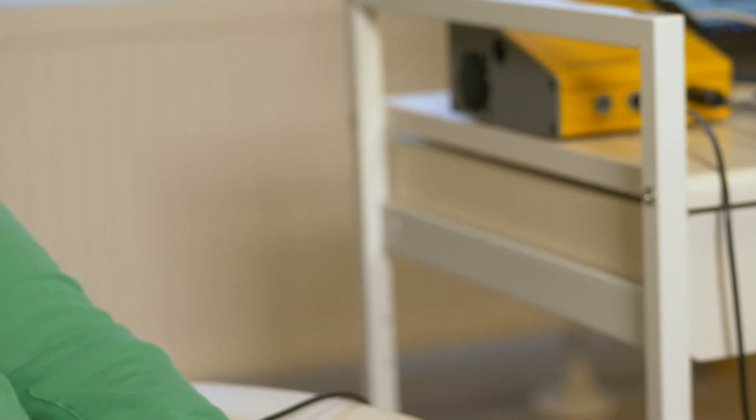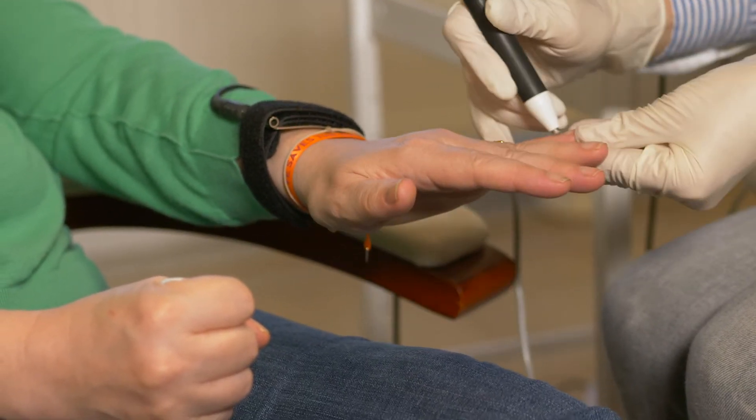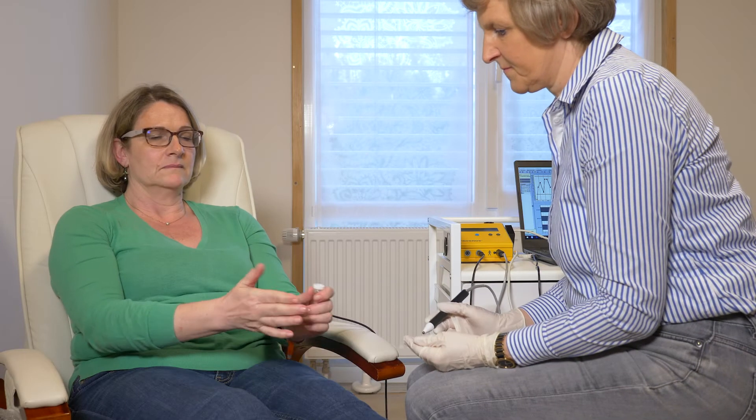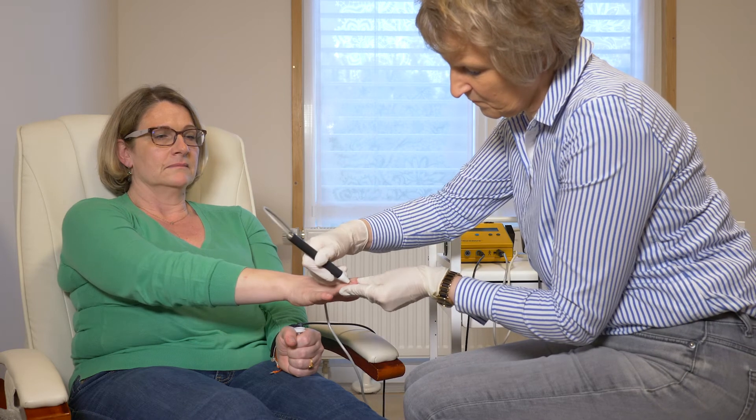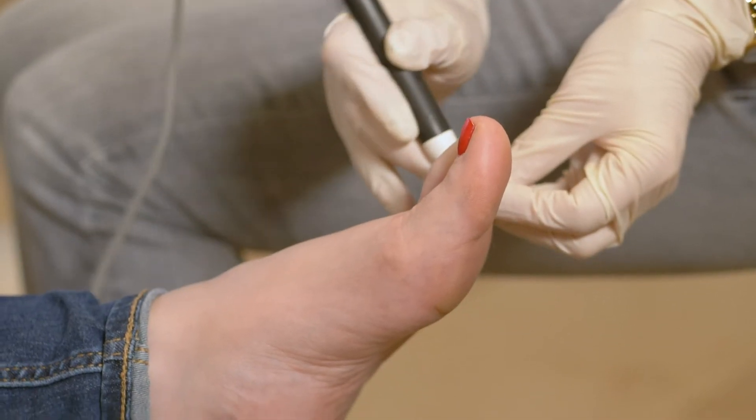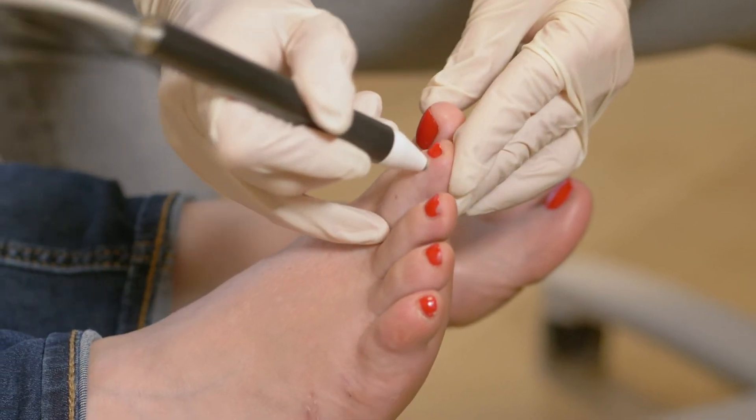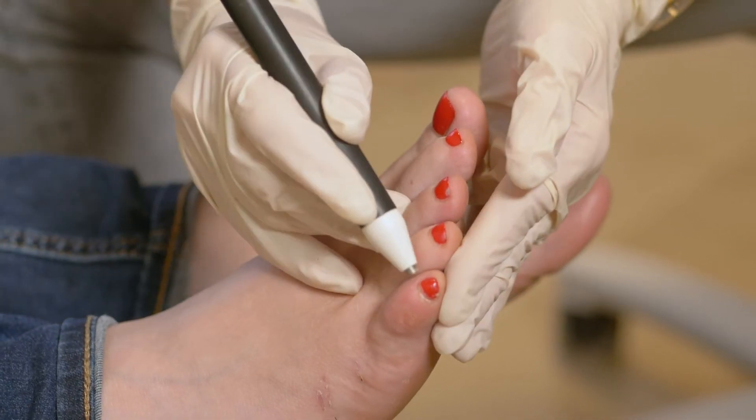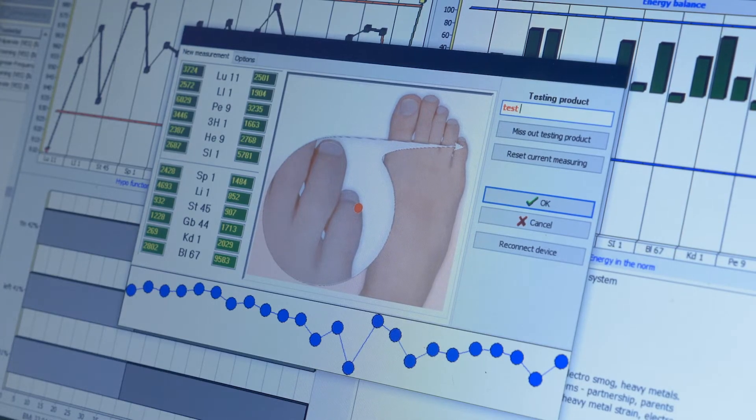Here, the patient takes the preparation in his hand during the measurement. For this, the preparation, solid or liquid substance is best filled or placed in an empty glass tube. Solid substances can also be handheld. The manually tested preparation must be named and written in the field Testing Product. The results will be then again shown in the Graphic Therapy Control Meridian.